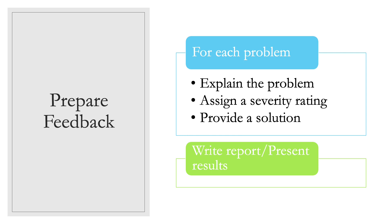After going through this process of asking questions and determining whether there are usability issues, for each problem you need to do three things: explain the problem, assign a severity rating, and provide a solution. Providing a solution is arguably the most important part because businesses don't want to hear just the problems — they want to hear the solution. If you offer advice on what the problems are without providing solutions, the company is not going to be very happy. After that, you'll write a report or present the results of your heuristic evaluation.